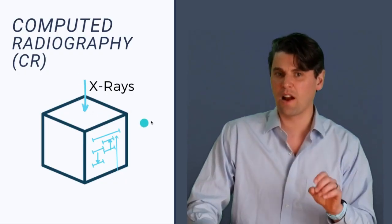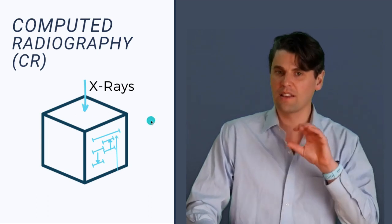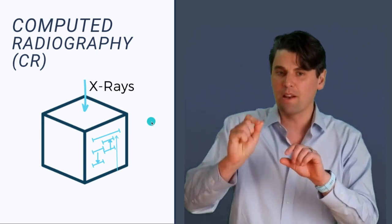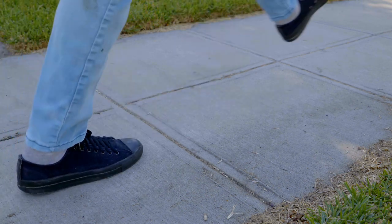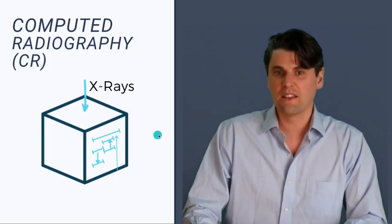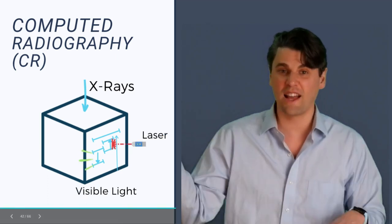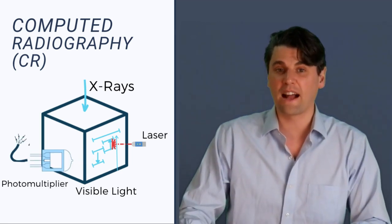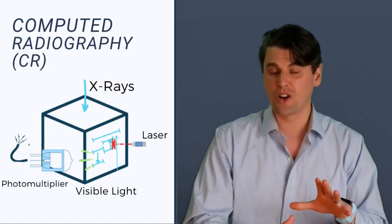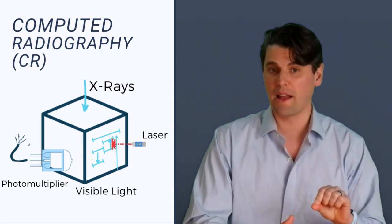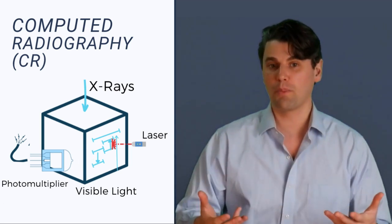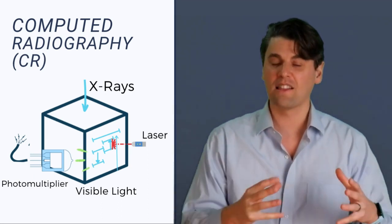So there is a latent image there. How do we free the latent image? There's actually some energy stored in the material, and in order to free it, we need to provide a little bit of a kick — basically shine a laser at the material. Once we shine a laser at the material, there is actually a separate light which is emitted. Then that separate light we're going to measure, and we're going to use what's called a photomultiplier tube in order to measure the light. When we're measuring light which isn't super strong, we want to use a photomultiplier tube to actually amplify that light signal.